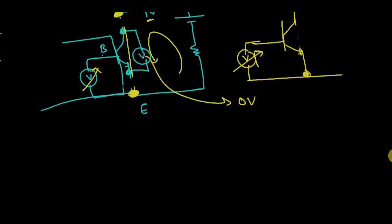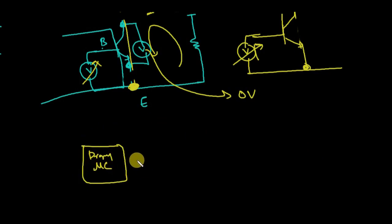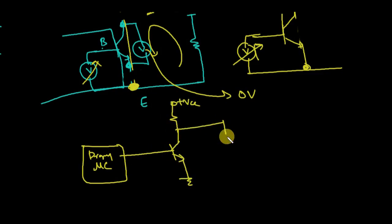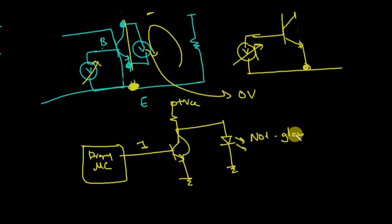Coming back to the problem statement: if I have a controller with a program to turn the LED on and off every 5 seconds, I'll feed that signal to a transistor with the LED connected. If the controller output is high (1), the collector-emitter are short-circuited — the LED connects to ground and does not glow.